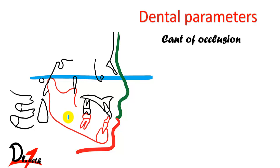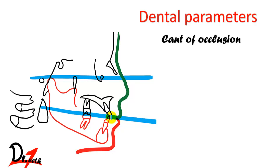The occlusal plane is constructed when we bisect the occlusion of the first permanent molar and the incisal overbite — that is how we create the occlusal plane. The mean value here is 9.3 degrees and the range is 1.5 to 14 degrees.